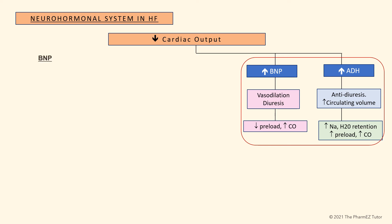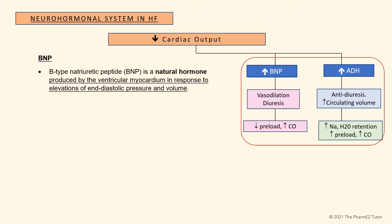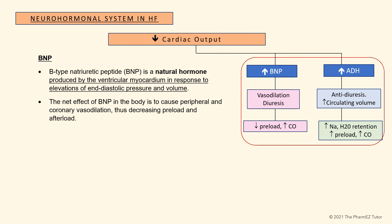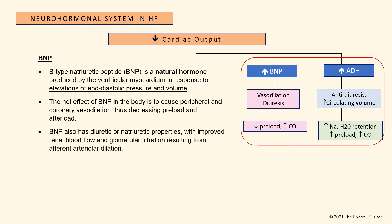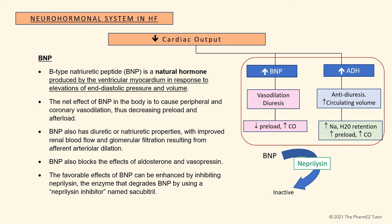Finally, let's talk about BNP. B-type natriuretic peptide is a natural hormone produced by the ventricular myocardium in response to elevations of end-diastolic pressure and volume. The net effect of BNP is to cause peripheral and coronary vasodilation, decreasing preload and afterload. BNP also has diuretic and natriuretic properties, with improved renal blood flow and glomerular filtration from afferent arteriolar dilation. BNP blocks the effects of aldosterone and vasopressin. The favorable effects of BNP can be enhanced by inhibiting neprilysin — the enzyme that degrades BNP — using the neprilysin inhibitor Sacubitril.